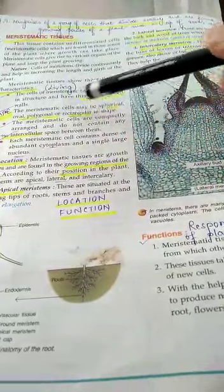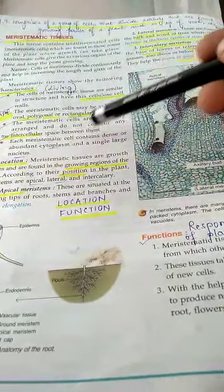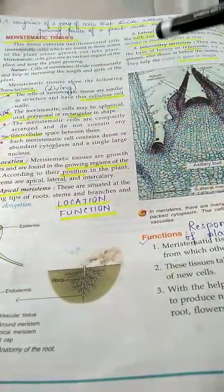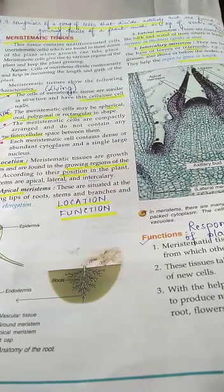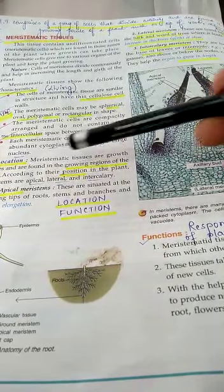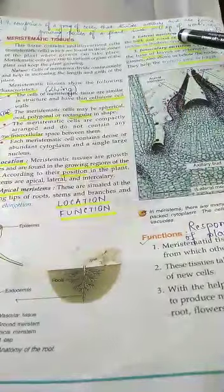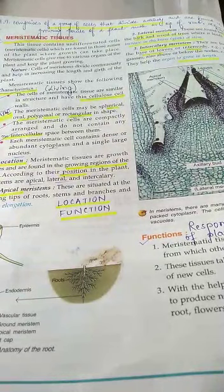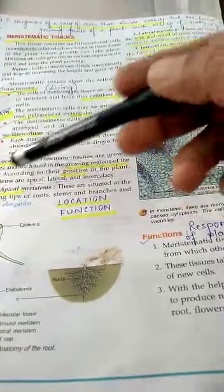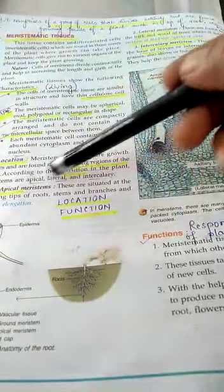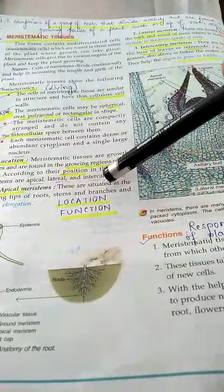Coming to the location of meristematic tissue: as they are made up of continuously dividing cells, they are mainly present in the growing regions of the plant. They are of three types based on their position in the plant. First, apical meristem — its location is the growing tips of roots, stems, and branches.